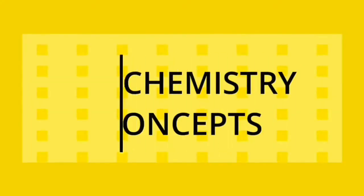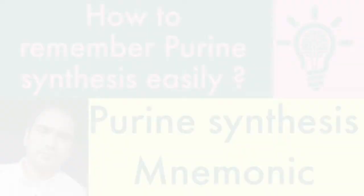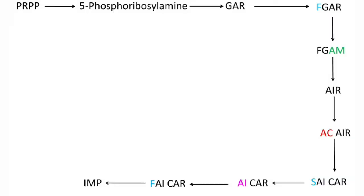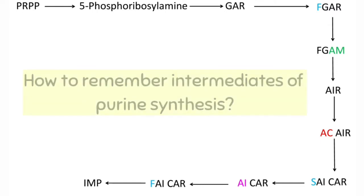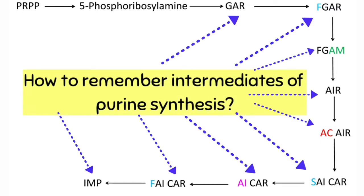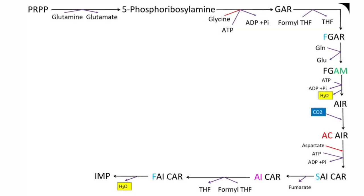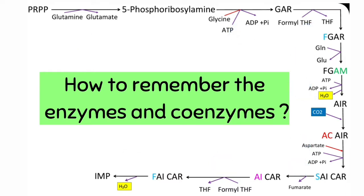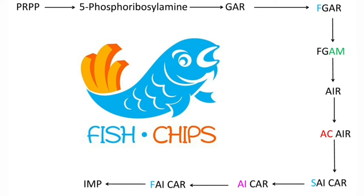Hello everyone, welcome to my channel Biochemistry Concepts. This video is about how to remember the purine synthesis in an easy way. In the first part, we will see how to remember the intermediates of the de novo purine synthesis, and in the second part, we will see how to remember the enzymes and coenzymes required in the pathway. Using fish as a clue, purine synthesis intermediates can be remembered easily.